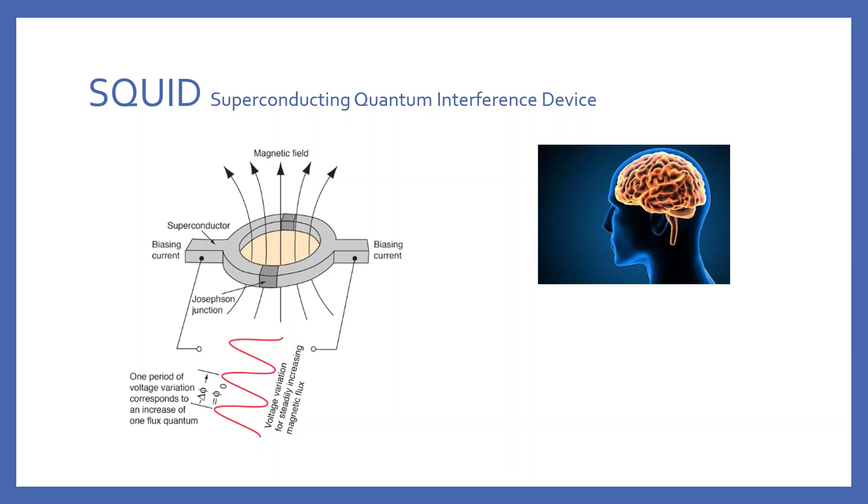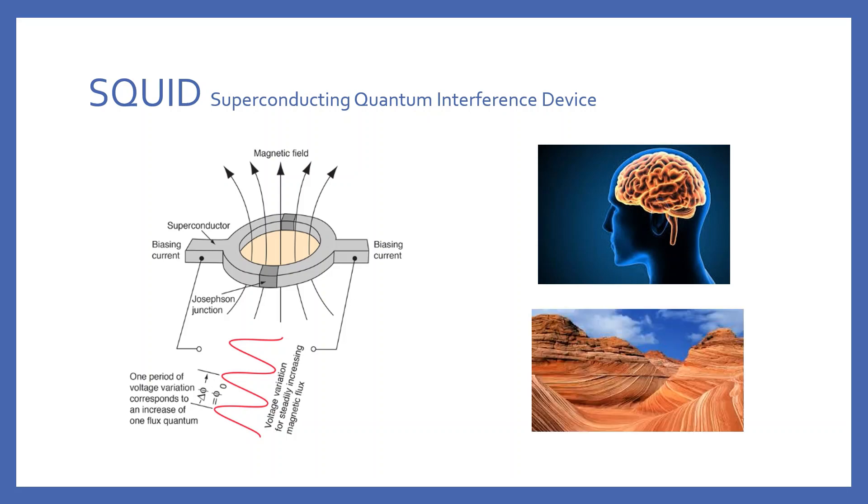SQUIDs are being used for research in a variety of areas. Since the brain operates electrically, by sensing the magnetic fields created by neurological currents, we can monitor the activity of the brain. SQUID magnetometer can be also used for geological research, detecting remnants of past geophysical changes of the Earth's field in rocks.